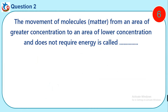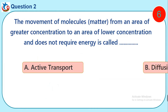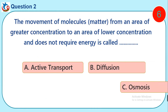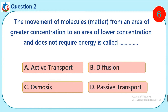Question 2. The movement of molecules or matter from an area of greater concentration to an area of lower concentration, and does not require energy, is called dash. A. Active transport. B. Diffusion. C. Osmosis. D. Passive transport.